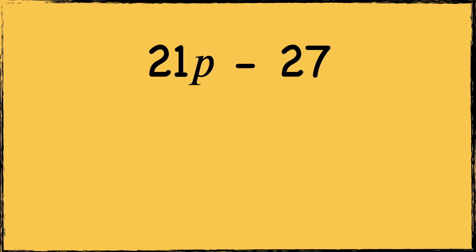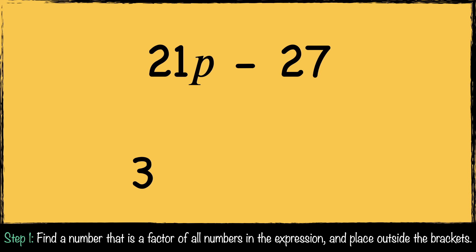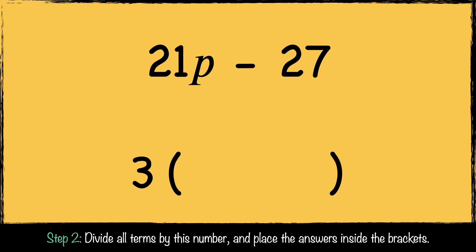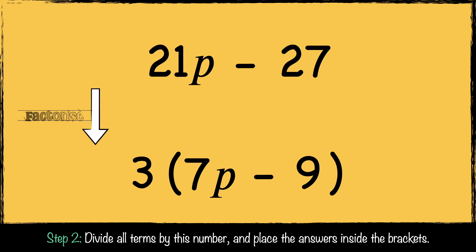Here's the last example: 21p − 27. We need to find a factor of the terms in this expression. 3 is a factor of both 21 and 27, so we put 3 in front of the brackets. Now we divide the terms by 3: 21p divided by 3 is 7p, and −27 divided by 3 is −9. So this expression can be factorized to 3(7p − 9).